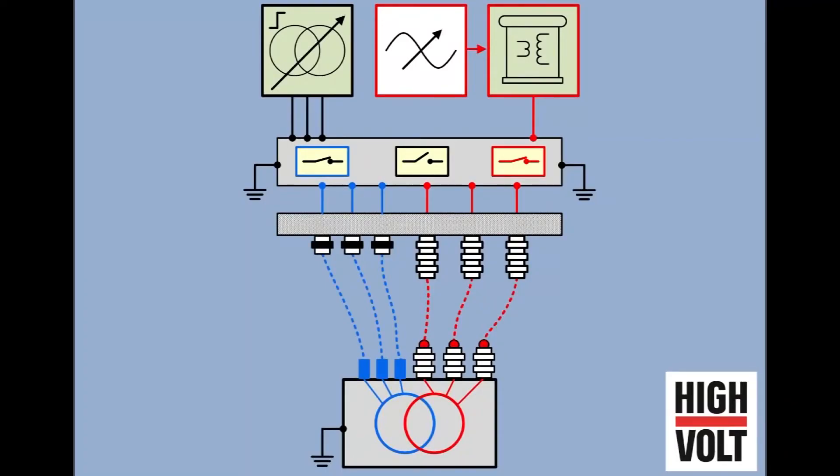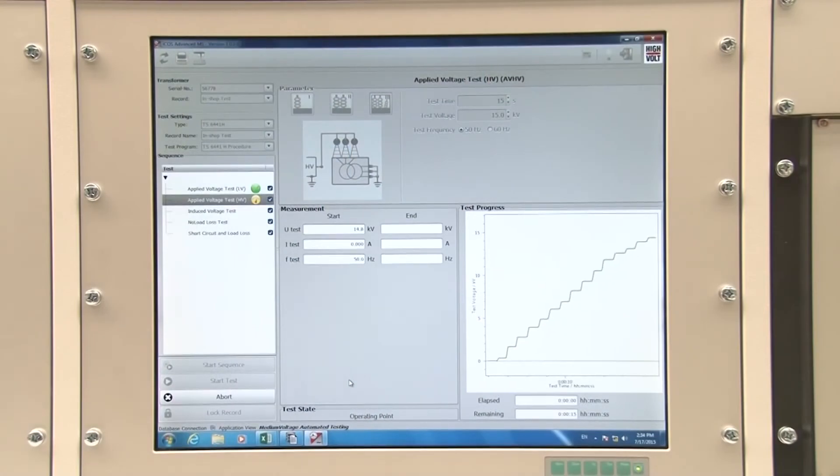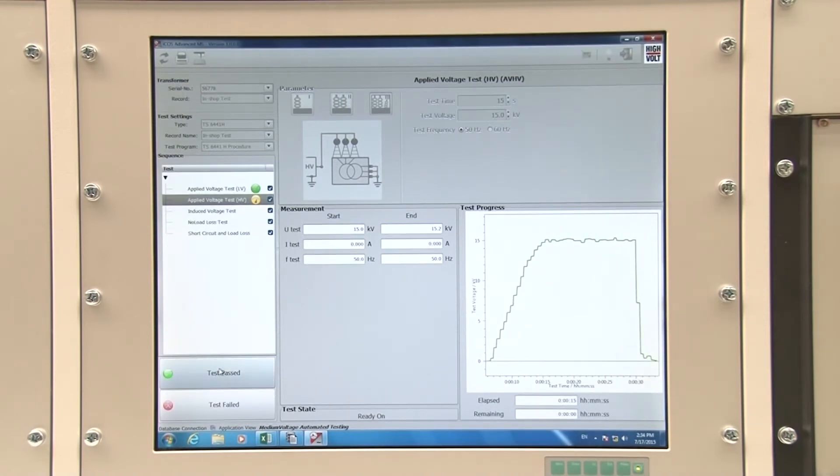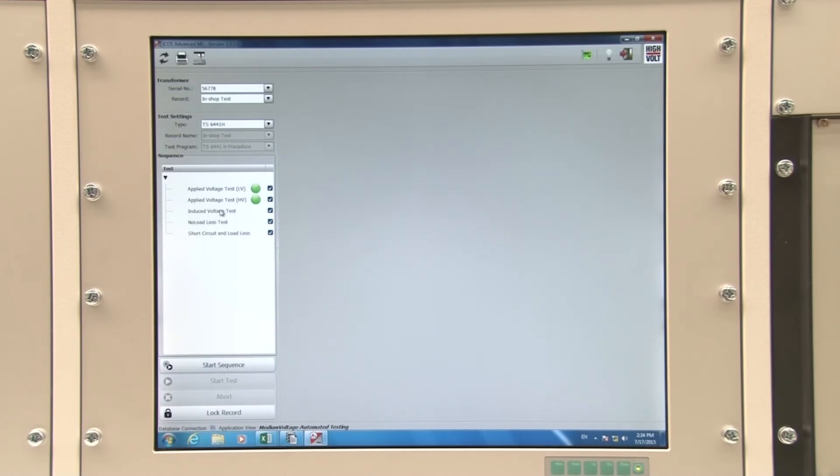The other end of the winding is also earthed automatically. It's your choice whether the individual tests are started separately or run as a complete sequence.